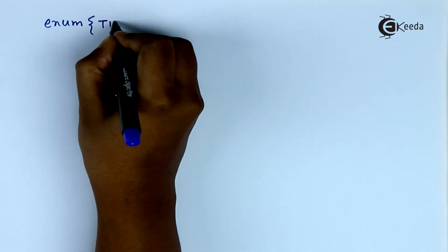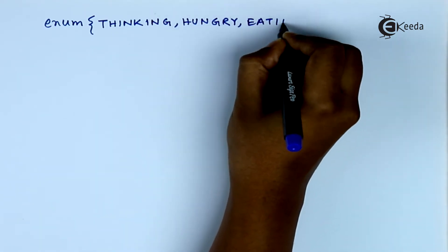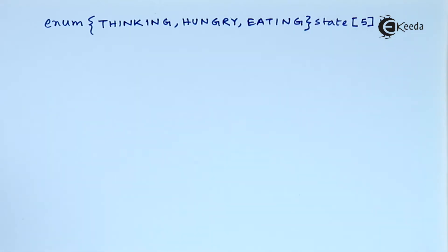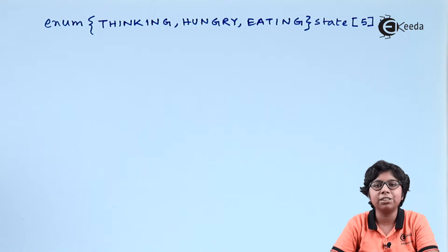To describe this situation where a philosopher will only grab a chopstick when both are available, we define three states that a philosopher can be in: eating, hungry, or thinking. We will see a data structure to describe this definition. Here we can see an enumerated data structure with an array of state assigned to five philosophers. The philosopher can go to eating only if both neighbors' chopsticks are freed — that is, state[i] equals eating if both neighbors' chopsticks are freed according to this structure.